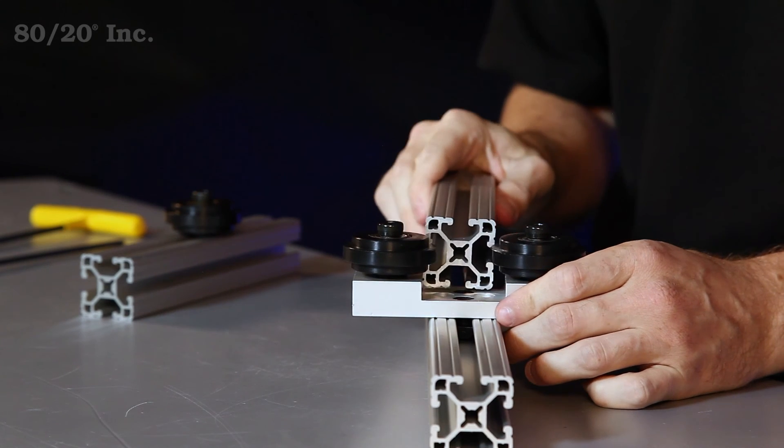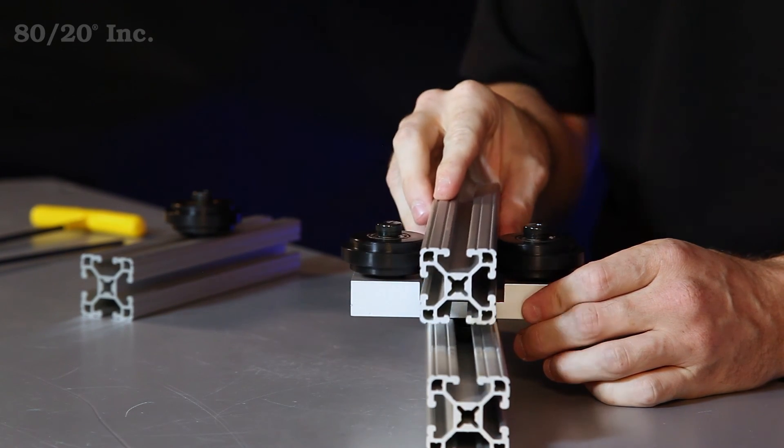From there, you'll take your mating profile and as you can see, you'll have nice smooth movement thanks to these roller wheels.